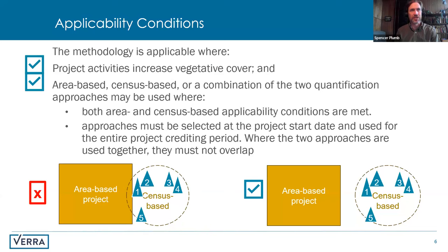As demonstrated in the bottom diagram, those areas cannot overlap. This is intended to prevent any double counting. Project areas must be separated by a 10-meter buffer. It is possible to have a grouped project where one group uses the area-based approach and another part uses the census-based approach; however, those cannot be physically connected.